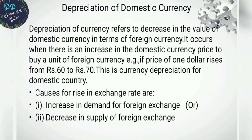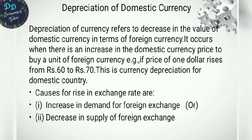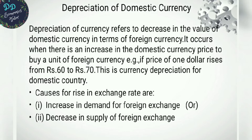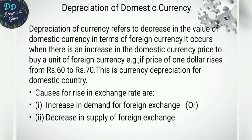For example, when one dollar goes from 60 rupees to 70 rupees, that increase is called currency depreciation for the domestic country. Because we are paying more rupees to buy one dollar, that is depreciation. The opposite — appreciation of domestic currency — is the reverse of this.